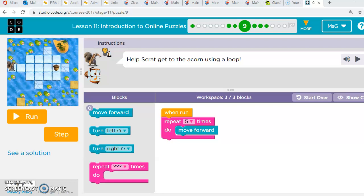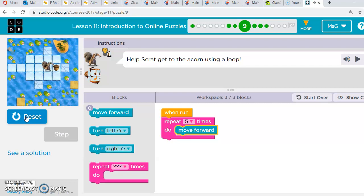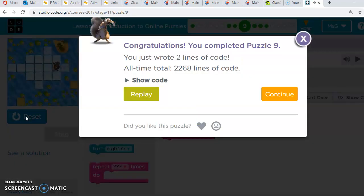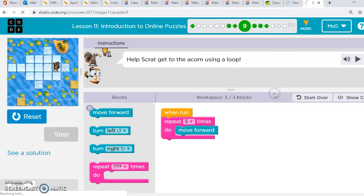So for puzzle one, we need to get Scrat to the acorn using only three blocks. So we have one, two, three. Option A has move forward inside of a repeat block for five. Let's see if that gets Scrat to the acorn. It does. So your answer for puzzle one is A.